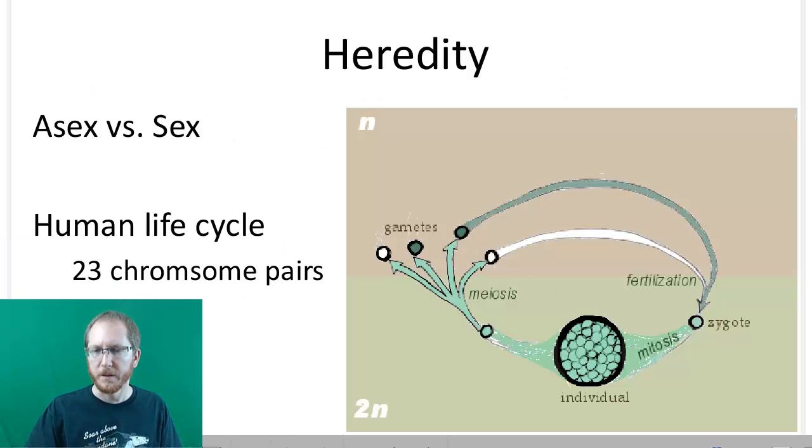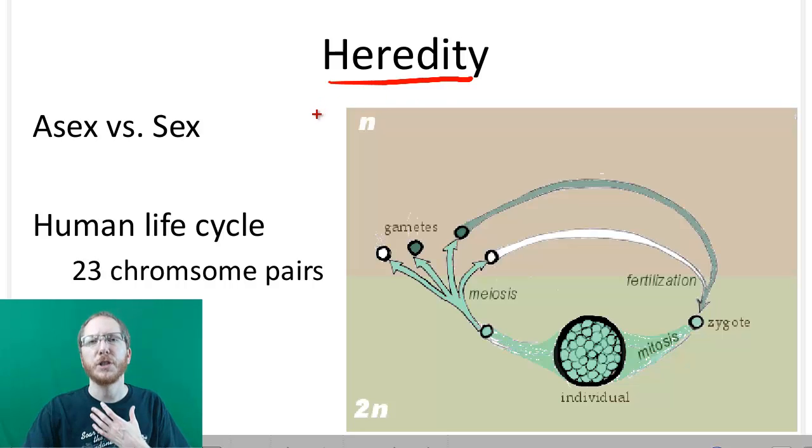So looking at this process, both of these life cycles, both of these ways of passing on your genetics, which we call heredity, are going to allow your genes to make it into offspring into the next generation. But there are differences between the two.